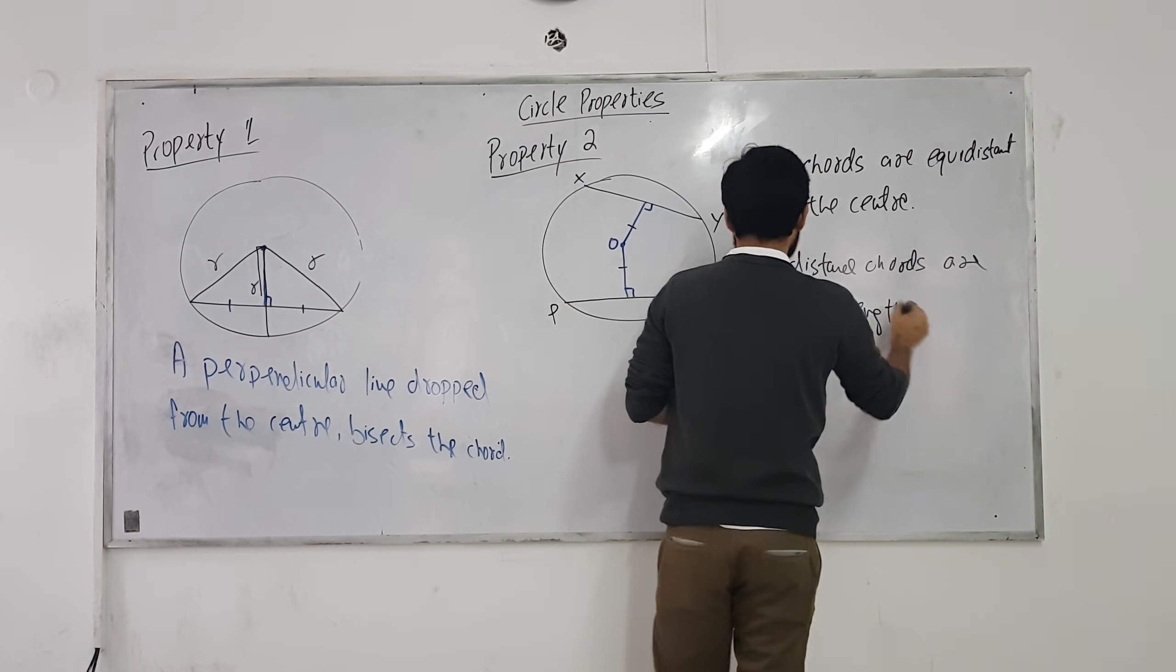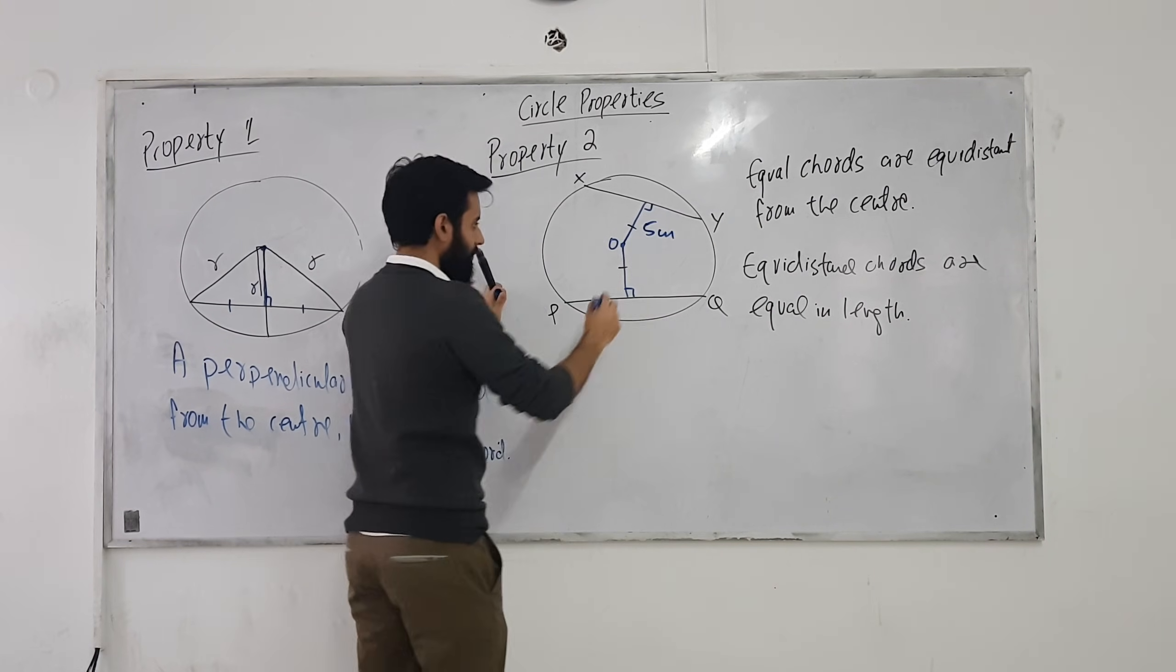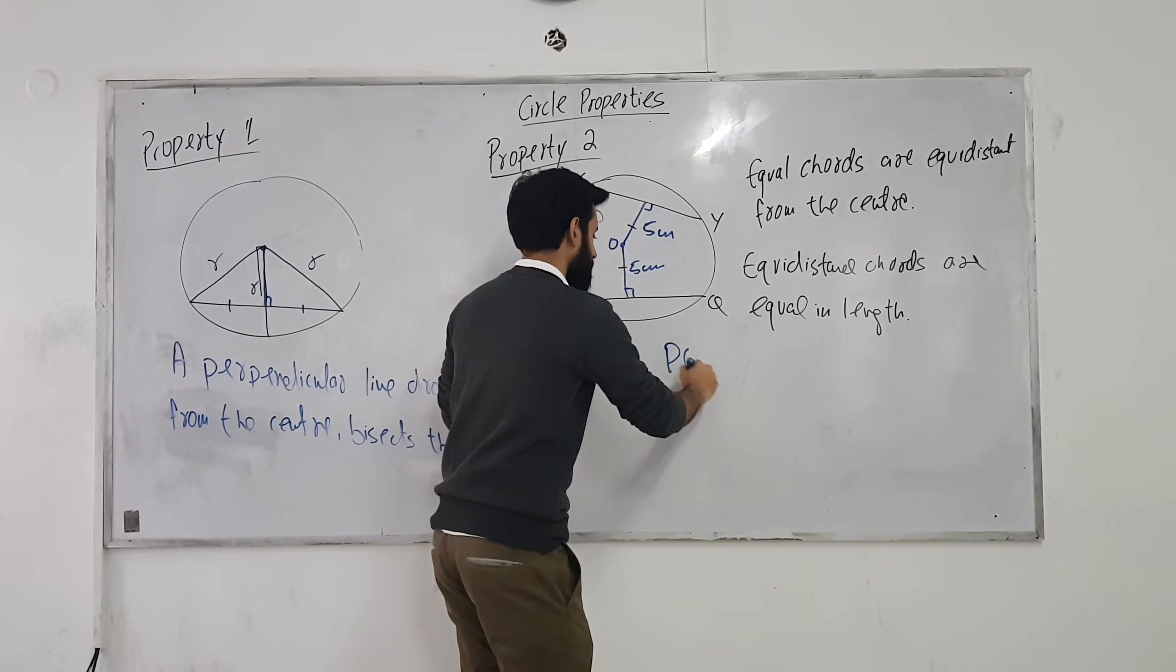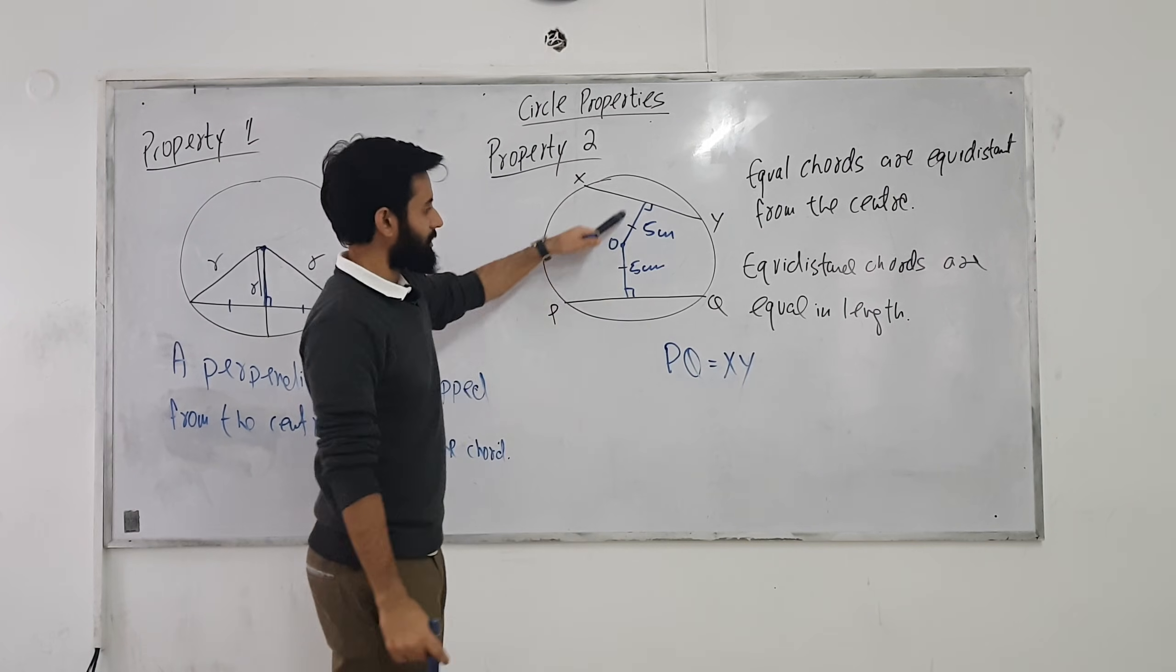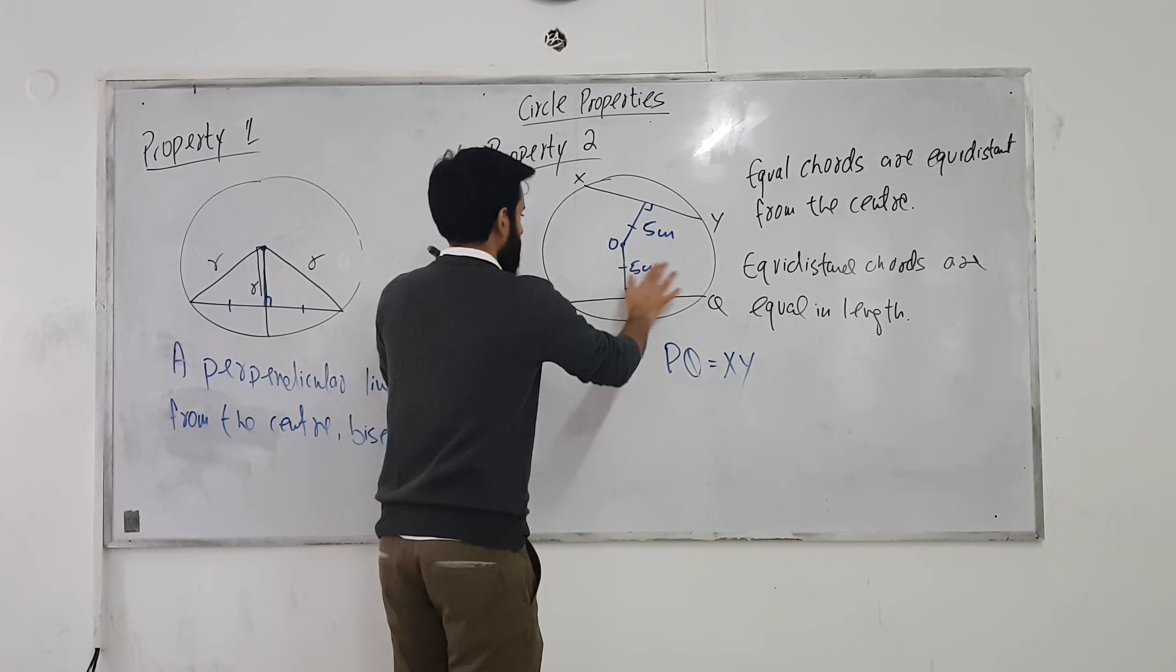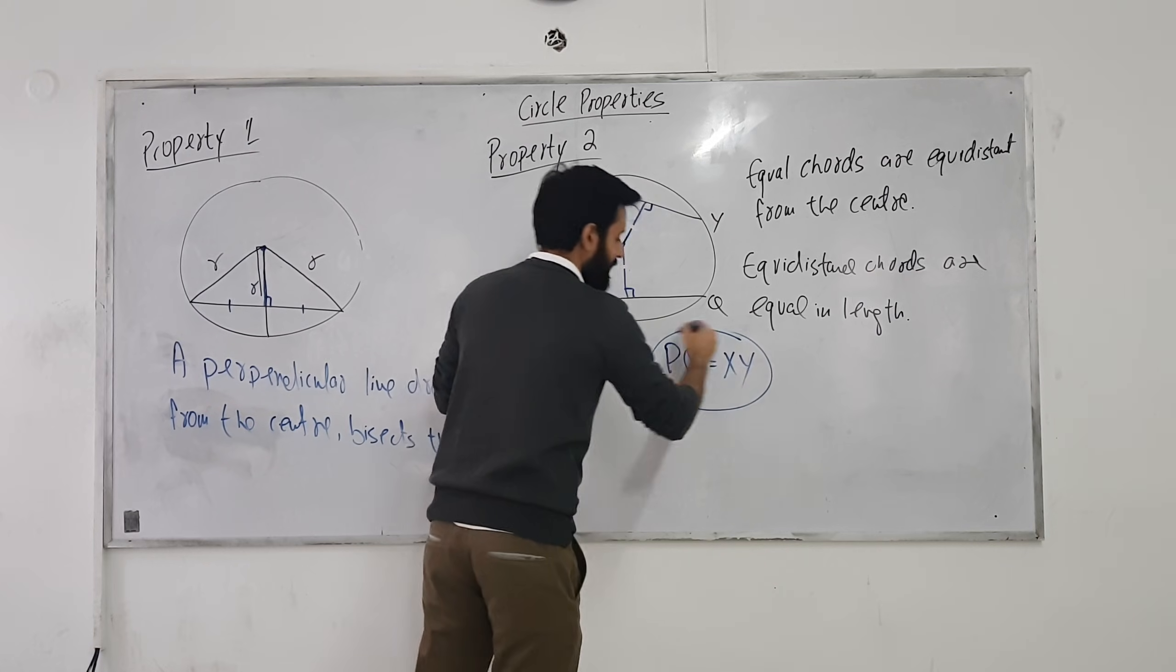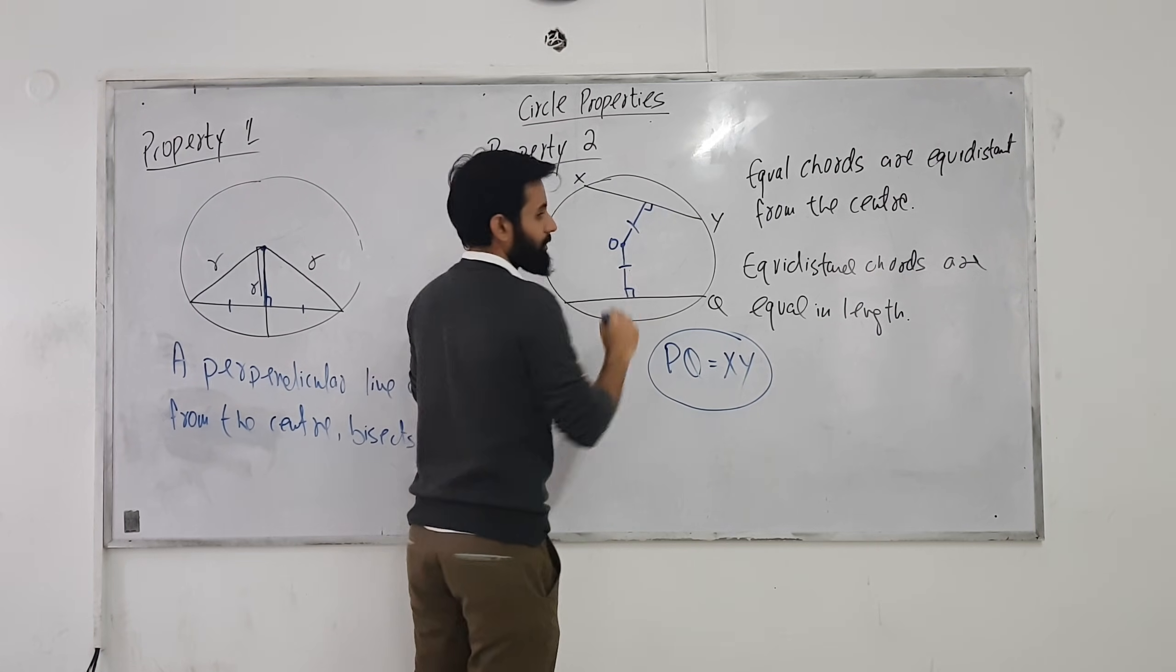I'll elaborate. Let's say this is five centimeters. And this will be five centimeters. So since their distance from the center is equal, what will their lengths be? They will be equal. Since they are equidistant, their lengths will also be the same. What's another way to look at it? Suppose their lengths are equal. Do you know what else is going to be equal? Distance from the center.